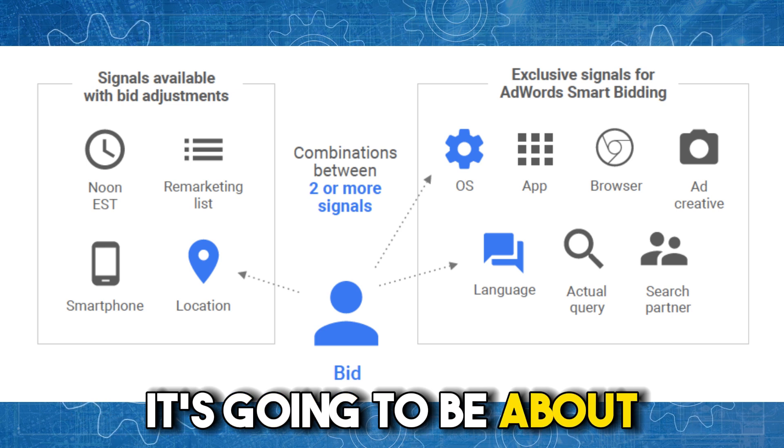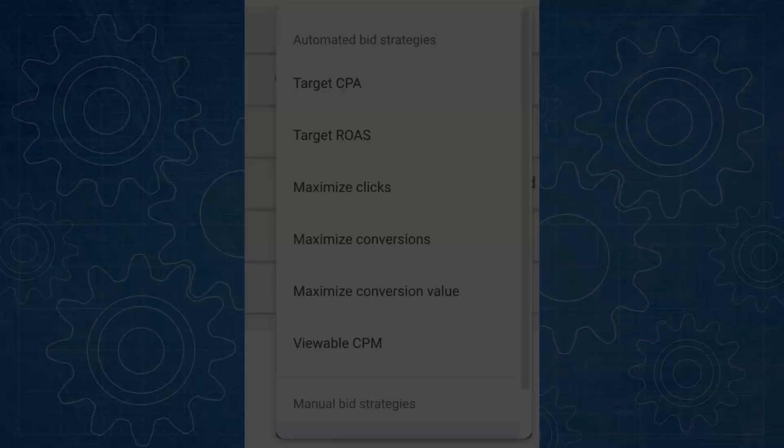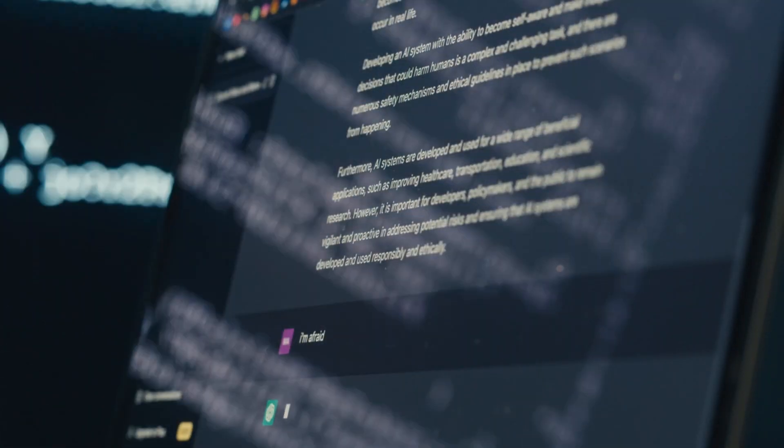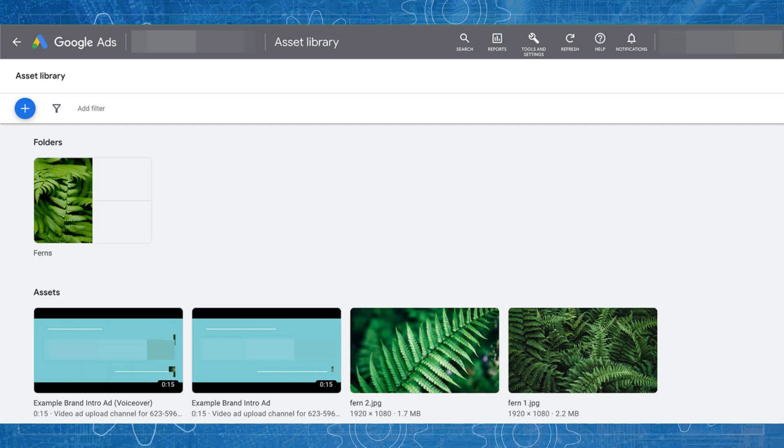Going back to the future of Google Ads, it's going to be about guiding artificial intelligence. Another prediction I made at the beginning of the year is that manual CPC will be removed from the system — it's going to happen at some stage. How could it exist in a framework where asset creation is led by AI, bidding is led by AI, and Google is investing so much proving that smart bidding generally outperforms manual CPC? When asset creation gets better than a human — which I don't doubt Google can achieve long term — how could they let manual CPC stand as a bidding strategy?